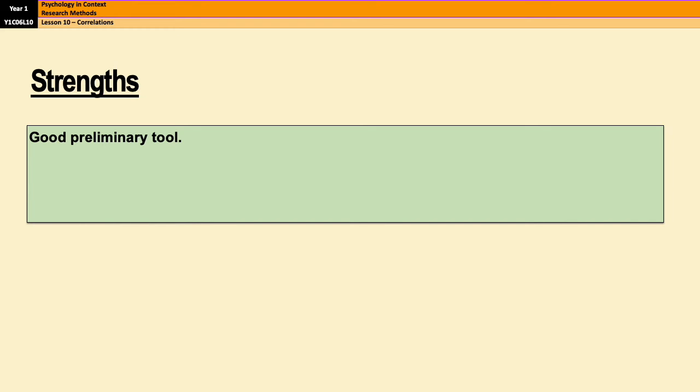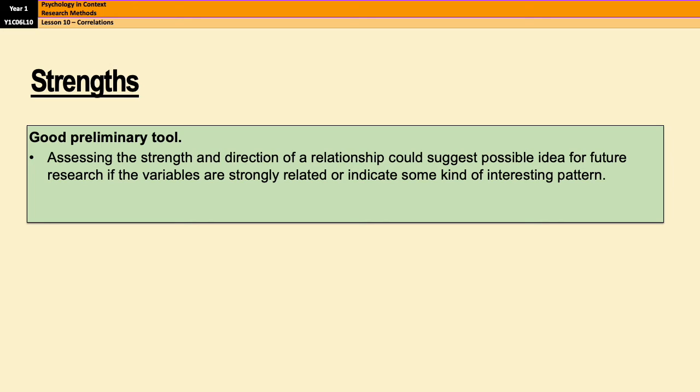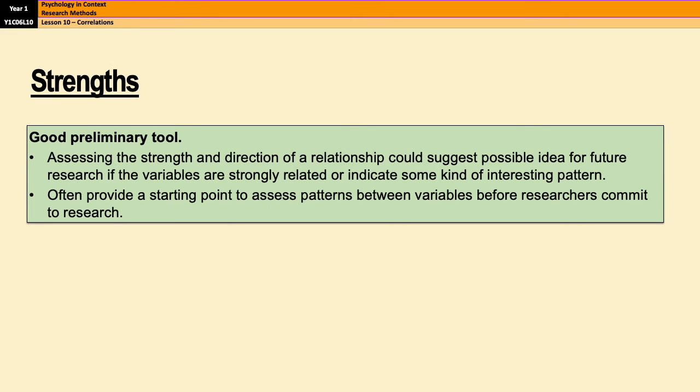So we'll start with strengths. A good thing about correlations is that they are a good preliminary tool. So assessing the strength of a relationship or the strength and more importantly, the direction of a relationship could suggest ideas for future research. So if you do a correlation and you find that there is a strong relationship between two variables or your results throw up some kind of interesting pattern, then you might want to dig into that a little bit more. So correlations very often provide a good starting point for research and people often conduct them before committing to long term research because you can do them quickly. And, you know, if there's nothing there, then you don't need to invest any more time.